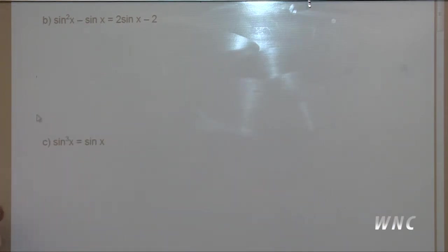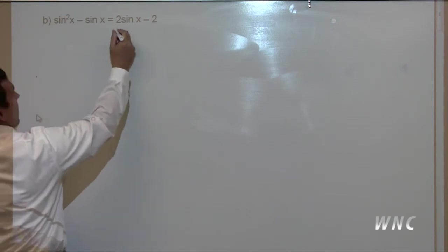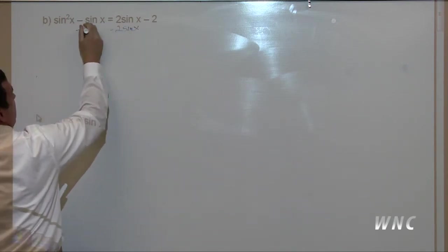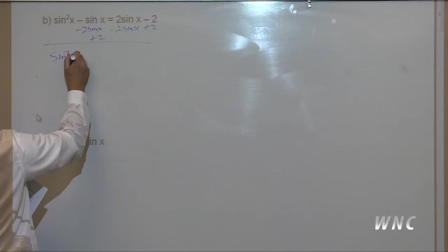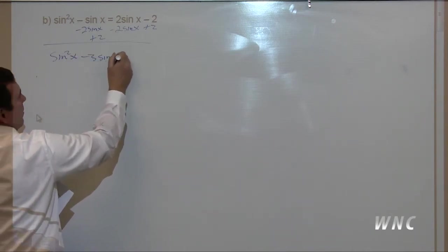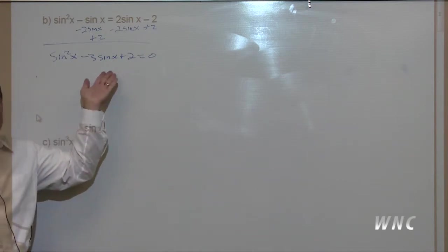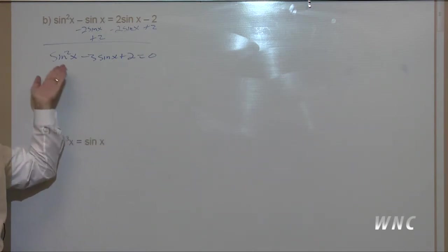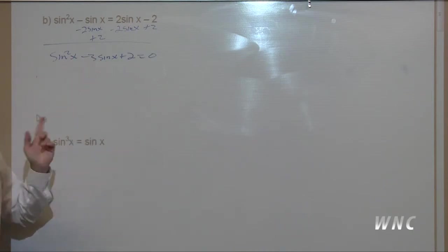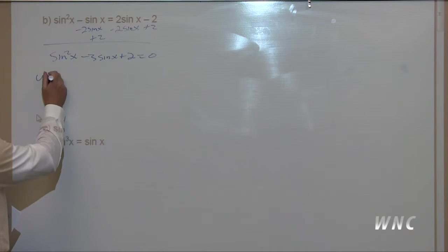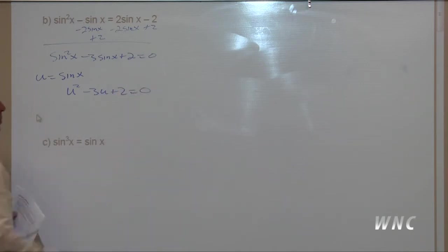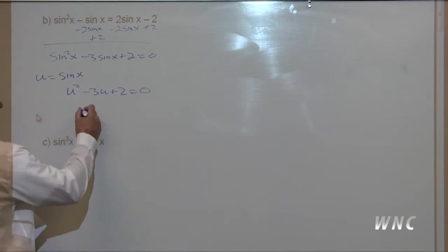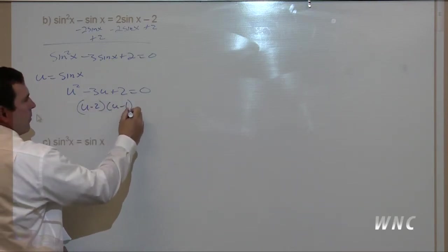Next: sine squared x minus sine x equals two sine x minus two. I'm going to bring everything to one side — subtract two sine x and add two — and we end up with sine squared x minus three sine x plus two equals zero. This is a quadratic equation. If it helps, we can do a u substitution: u equals sine x, giving us u squared minus three u plus two equals zero, which factors to u minus two times u minus one equals zero.